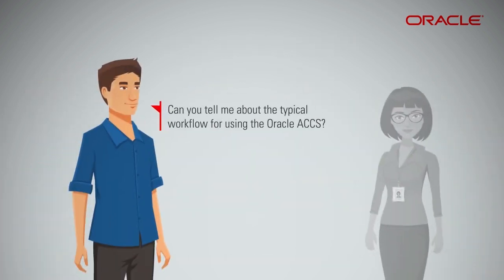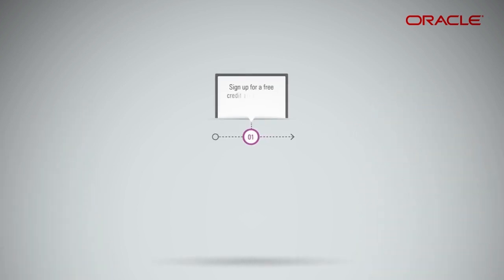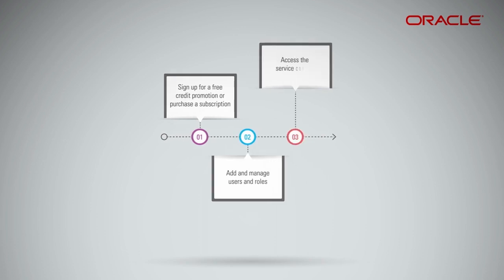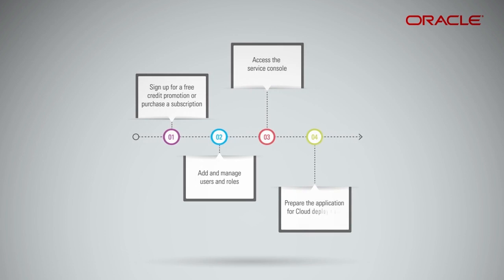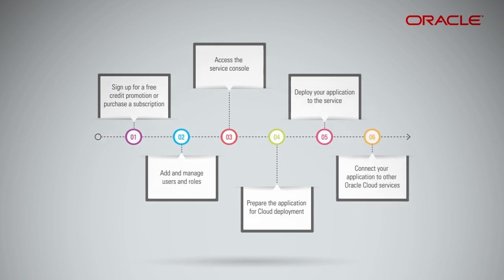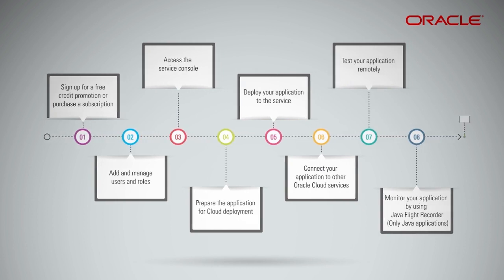Can you tell me about the typical workflow for using Oracle ACCS? To start using Oracle ACCS, sign up for a free credit promotion or purchase a subscription to Oracle Cloud. Add and manage users and roles, and optionally create additional accounts for your cloud users. Access the service console and prepare the application for cloud deployment — learn how to create a new application or modify an existing one. Deploy your application via the user interface, the REST API, or from Oracle Developer Cloud Service. Connect your application to other Oracle Cloud services, test your application remotely, monitor it using Java Flight Recorder, and then manage your application.